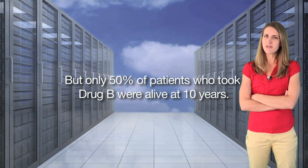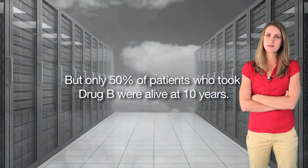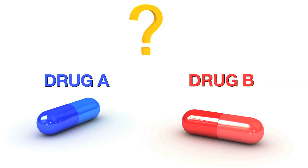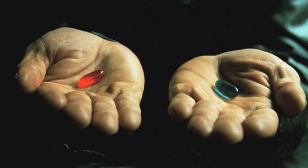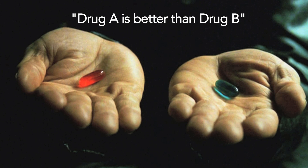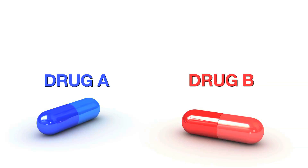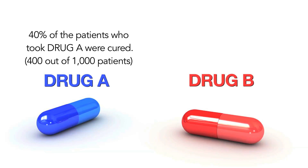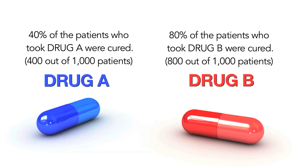But how is evidence different from what my doctor tells me? Let's say you're trying to decide whether to take drug A or drug B for a specific disease. An expert or doctor will give you an opinion such as, 'I recommend you take drug A because it's much better than drug B at curing this problem.' Evidence will say, '40% of the patients who took drug A were cured, whereas 80% of the patients who took drug B were cured.'